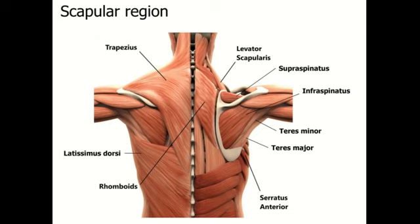This is an image of the back and the scapular region as seen from the posterior side. On the left side, a superficial dissection is shown — you can identify the large triangular-shaped trapezius muscle, inserted onto the spine of the scapula, acromion, and the back of the clavicle. On the right side, a deep dissection shows the levator scapulae and rhomboids attached to the vertebral border of the scapula. Supraspinatus, infraspinatus, teres minor, teres major, and serratus anterior are also visible.